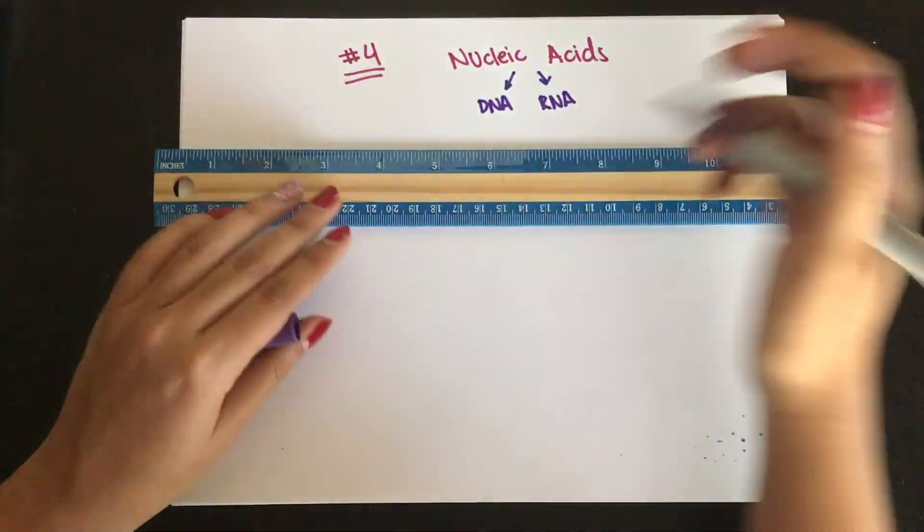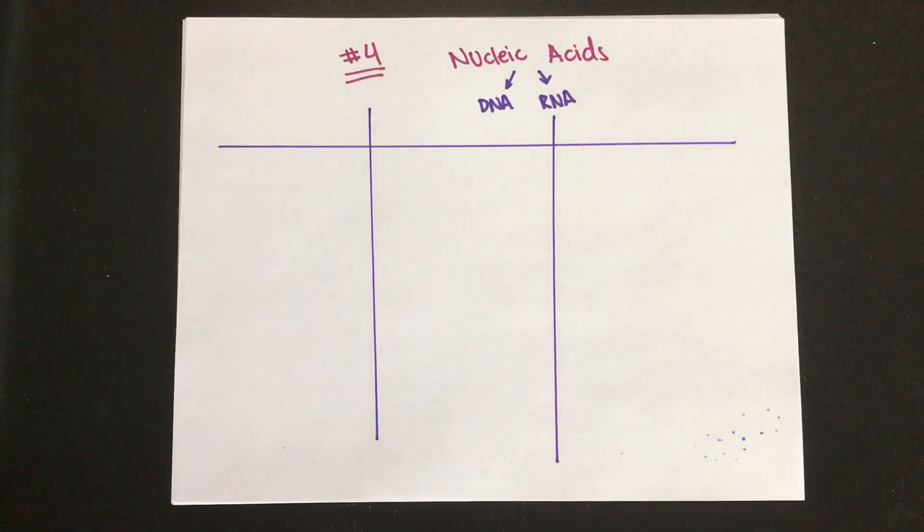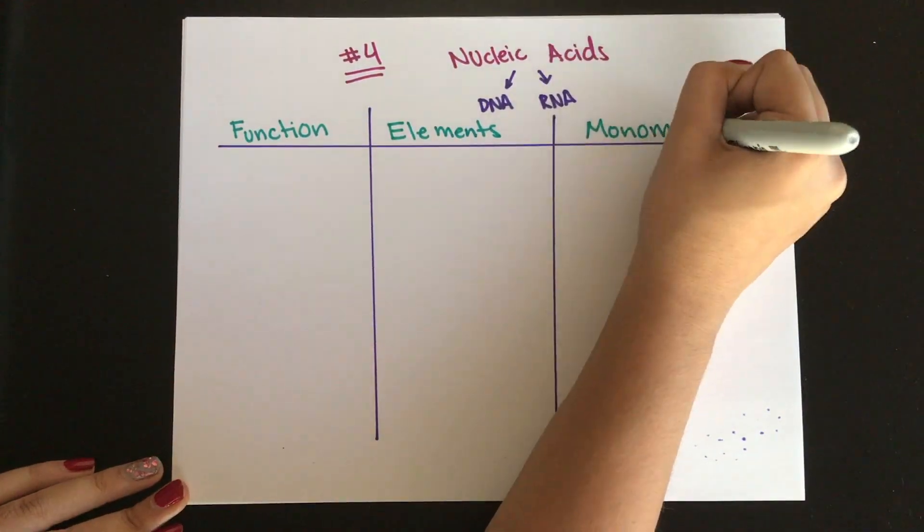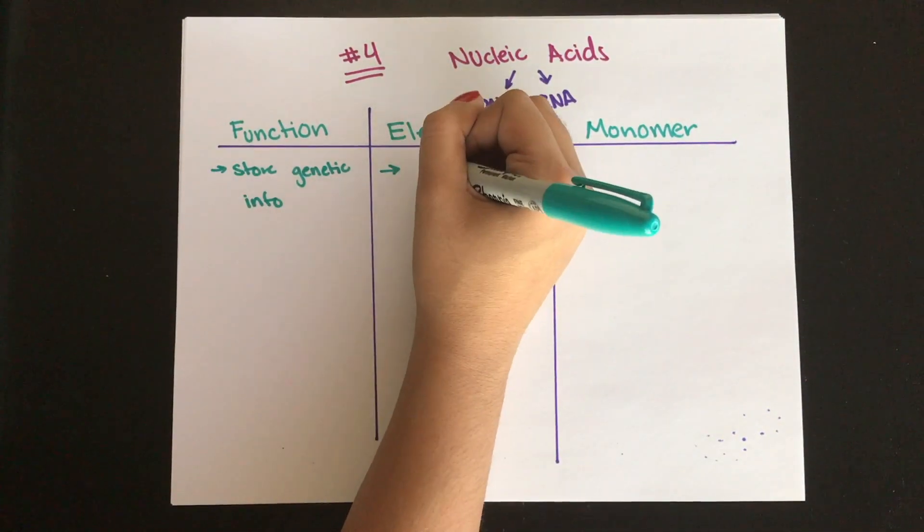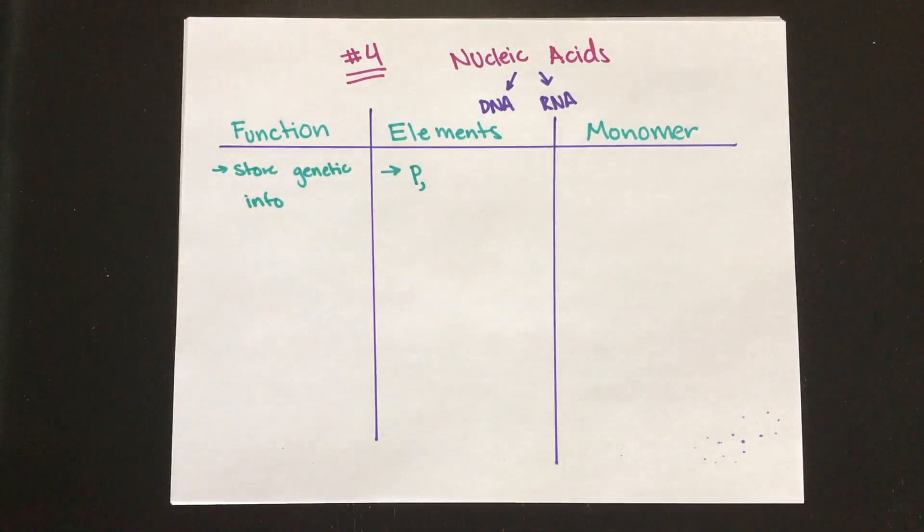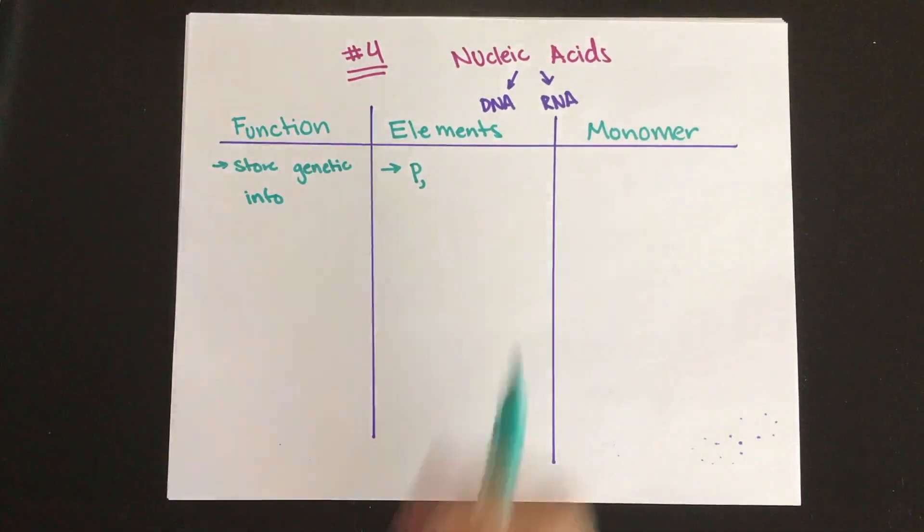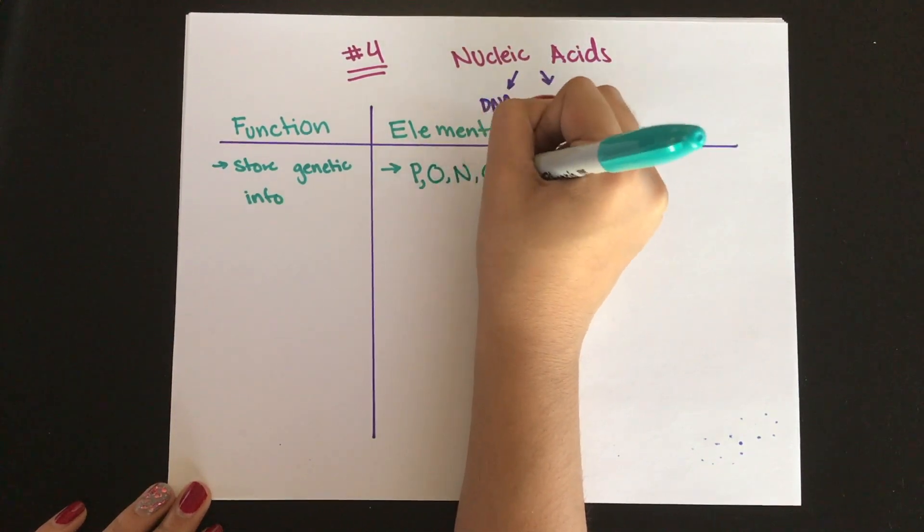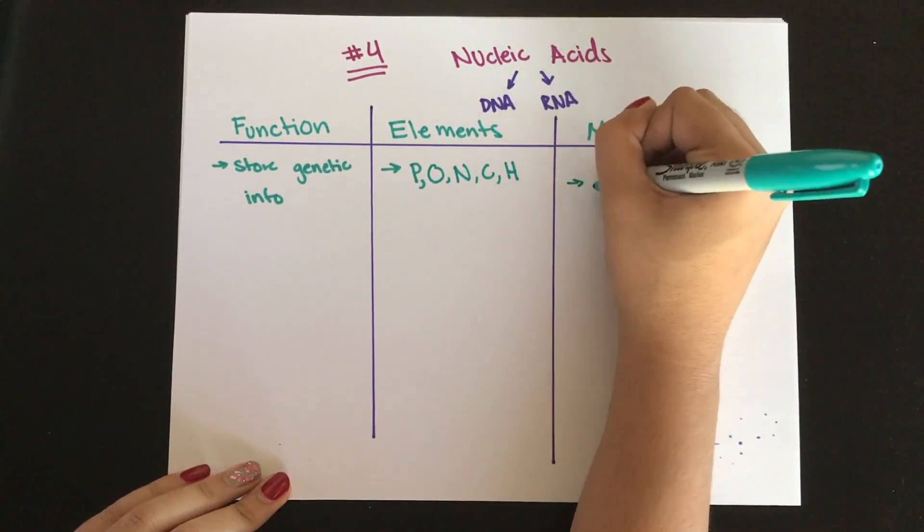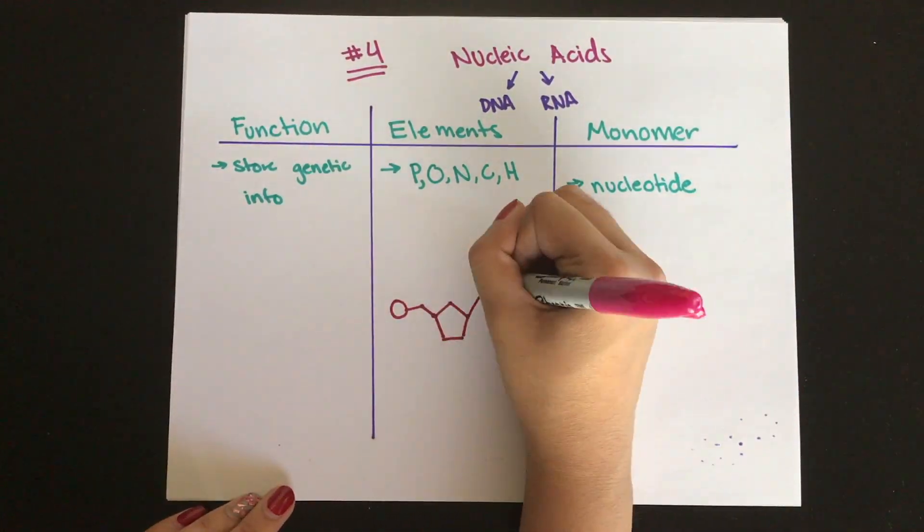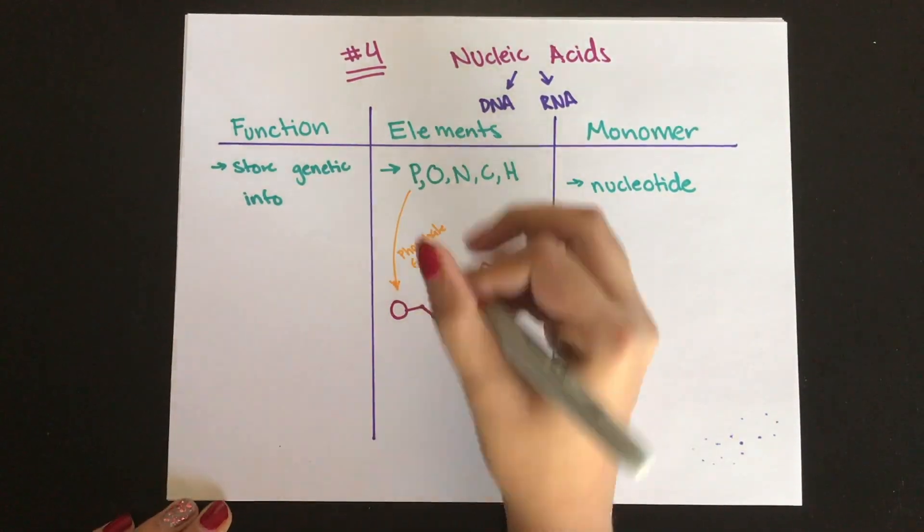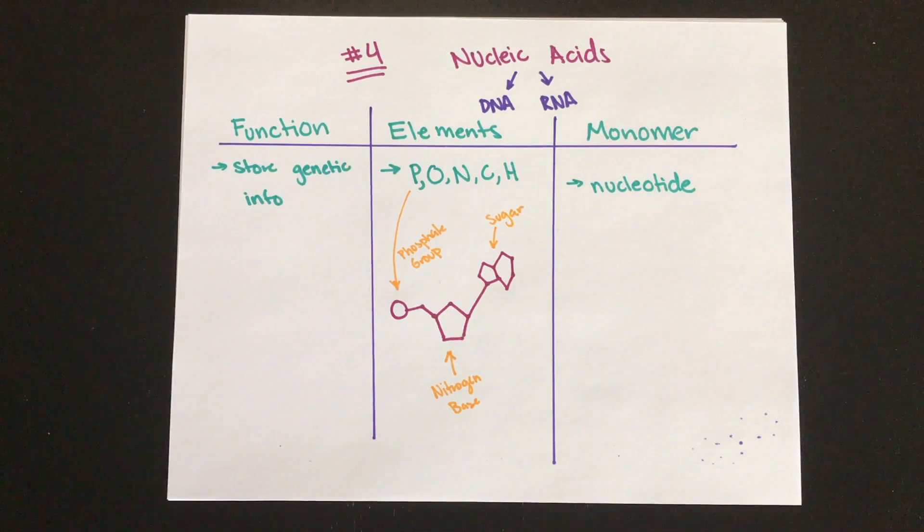Lastly, we're going to talk about nucleic acids, which include DNA and RNA. First we're going to talk about DNA, which is a double-stranded molecule that forms a double helix, and it is bound by hydrogen bonds and covalent bonds. Each strand is complementary to each other. The monomer of a nucleic acid is called a nucleotide, and these are made up of a phosphate, sugar, and a nucleotide base.